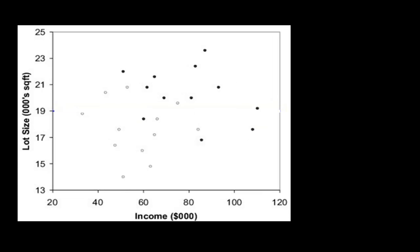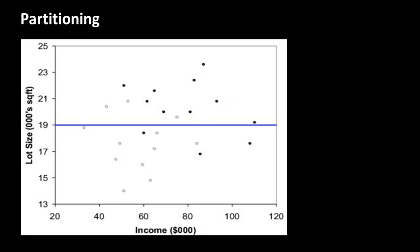You notice that both of these regions are now much more homogeneous than was the whole case. In the whole case, we had 12 owners and 12 non-owners of riding mowers. But now, if you look at the top region, you've got mostly owners — a fairly homogeneous group. The bottom region consists of mostly non-owners — another very homogeneous set. We want to keep on partitioning the space such that we end up with partitions that are, as far as possible, completely homogeneous.